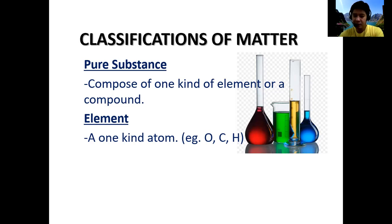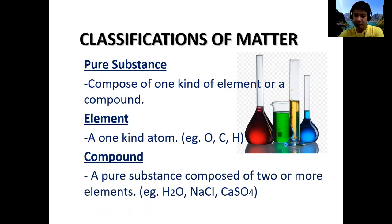A compound is a pure substance composed of two or more different elements. For example, water (H₂O) is composed of hydrogen and oxygen. Sodium chloride, or table salt, is composed of sodium and chlorine. Calcium sulfate (CaSO₄) is a compound made up of three different elements: calcium, sulfur, and oxygen.